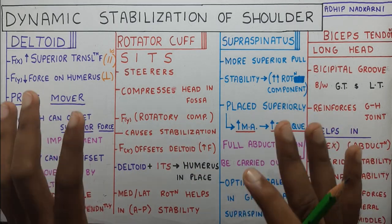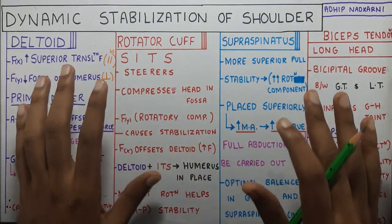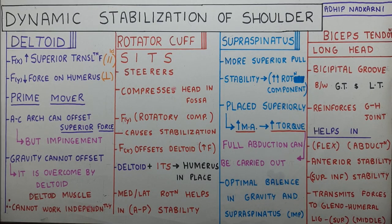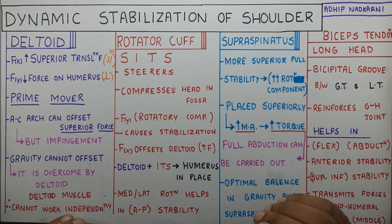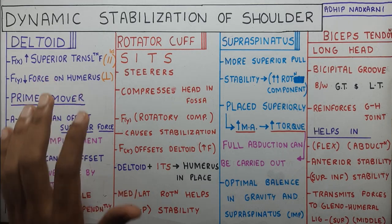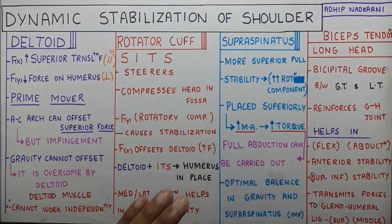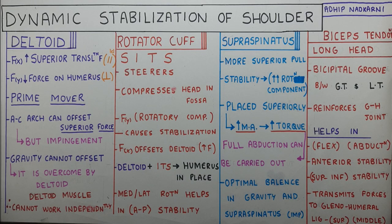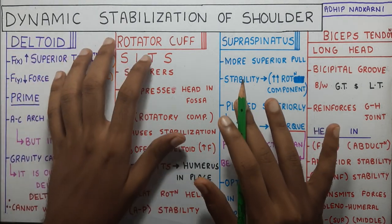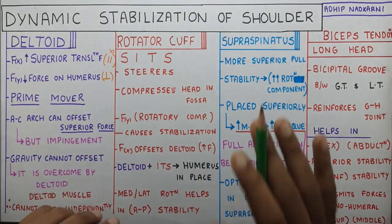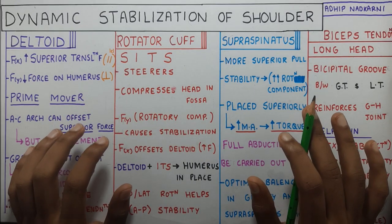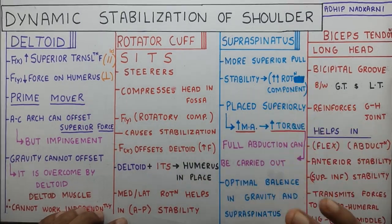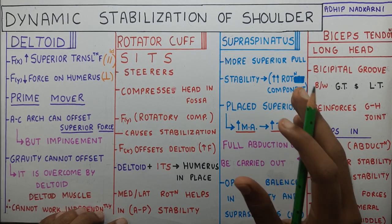So if you look at all this you might get intimidated because there are so many divisions and so many points, but I can assure you that at the end of the video you'll know all the functions of each muscle and the role they play in dynamic stabilization of your shoulder joint. Basically, dynamic stabilization is provided by different muscles, and the important part is that all these structures are active, contractile structures.